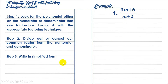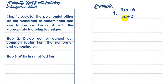Here we have example number 1: 3m plus 6 all over m plus 2. As you can see, we check which is factorable — the numerator, the denominator, or both. For 3m plus 6, do we have a common factor between 3m and 6? That is the first factoring technique we learned: common factor, or GCMF.